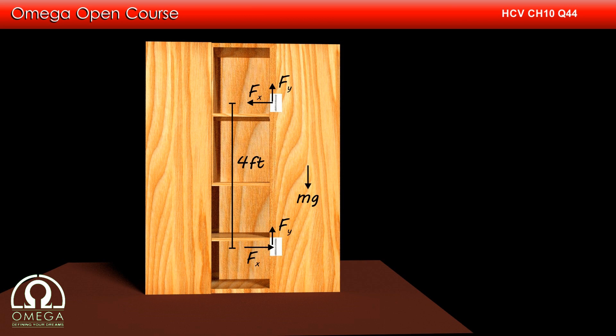Since the door is in rotational as well as translational equilibrium, net torque about all points and net force in all directions must be equal to zero. Balancing the forces in vertical direction, we get 2Fy = mg which implies Fy = mg/2. Putting g = 10 m/s², we get Fy = 40 N.